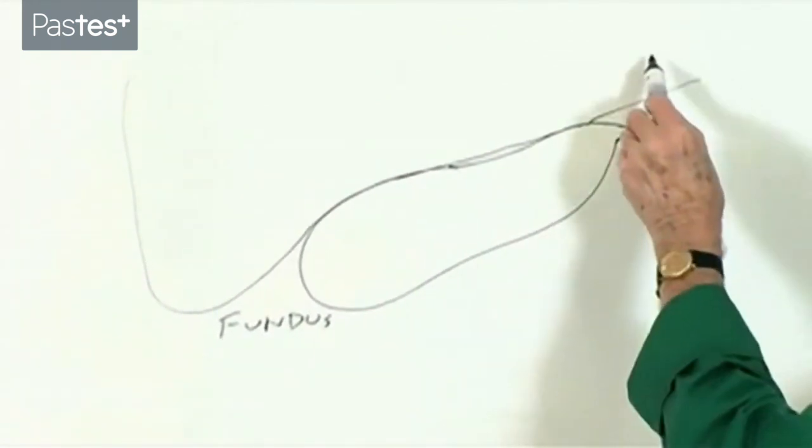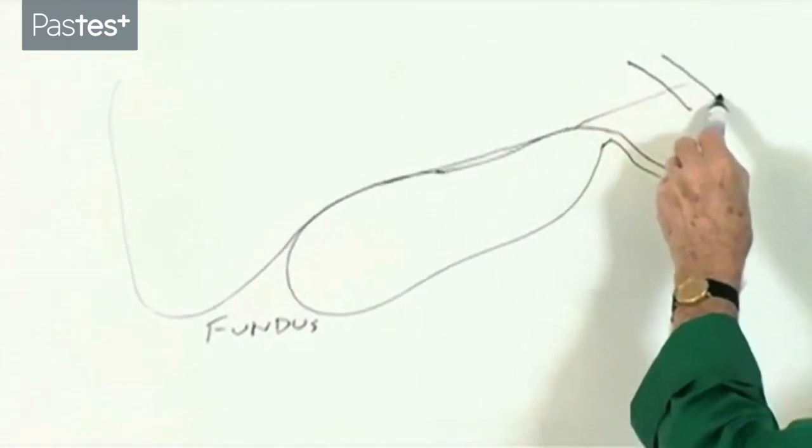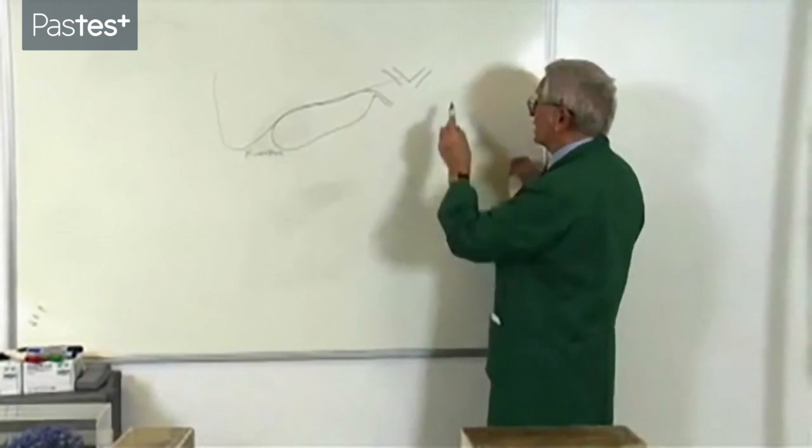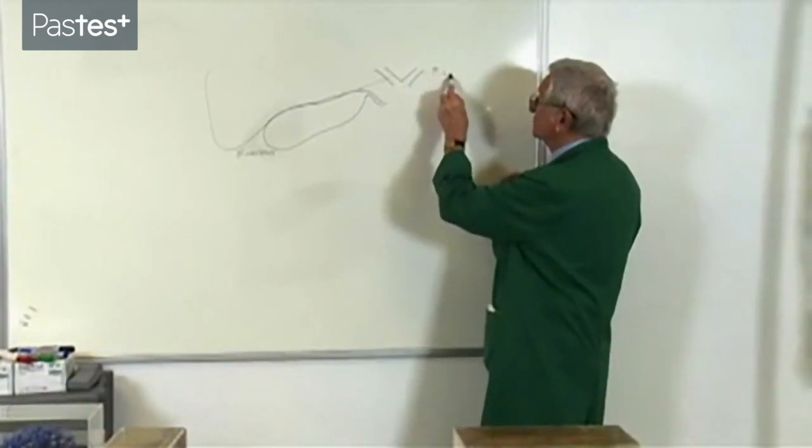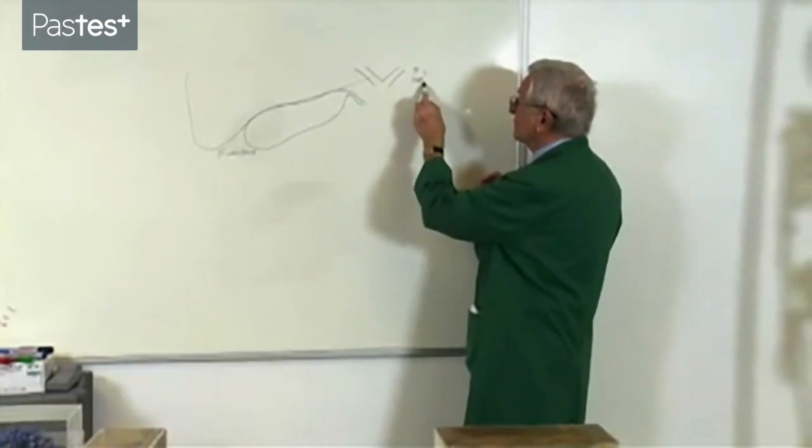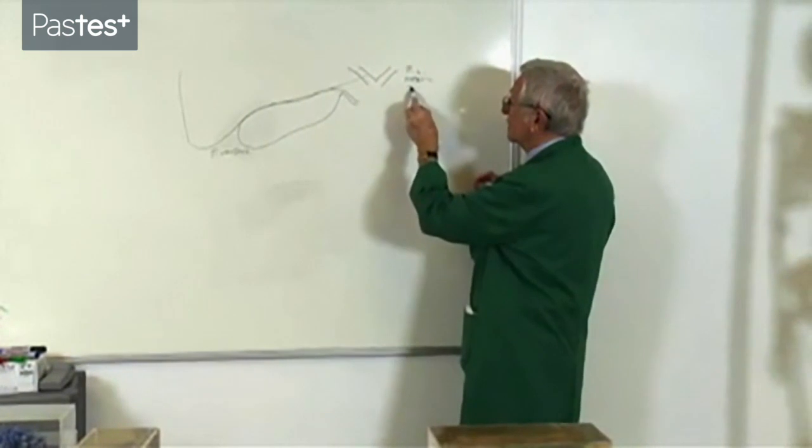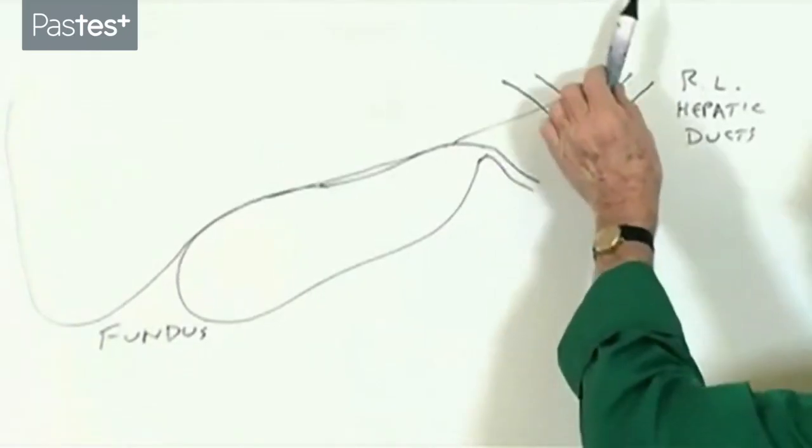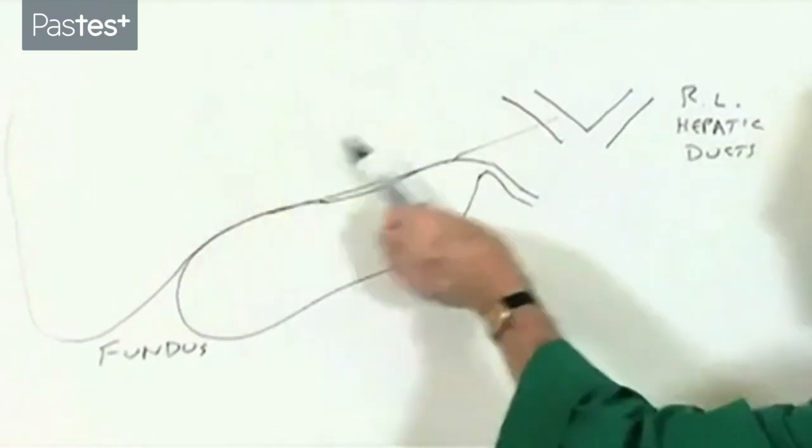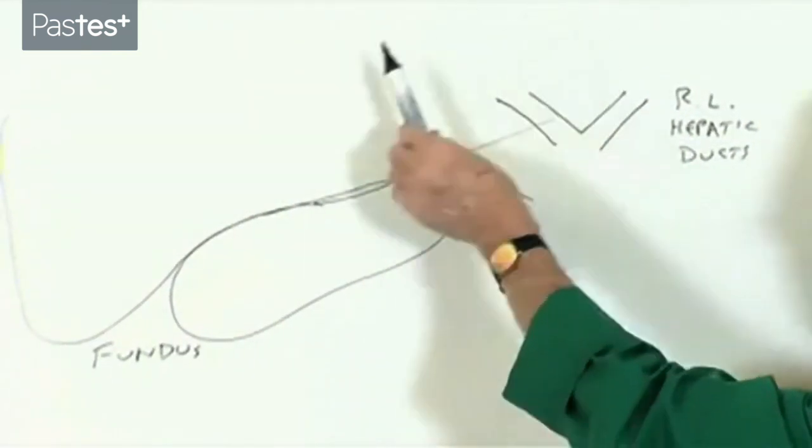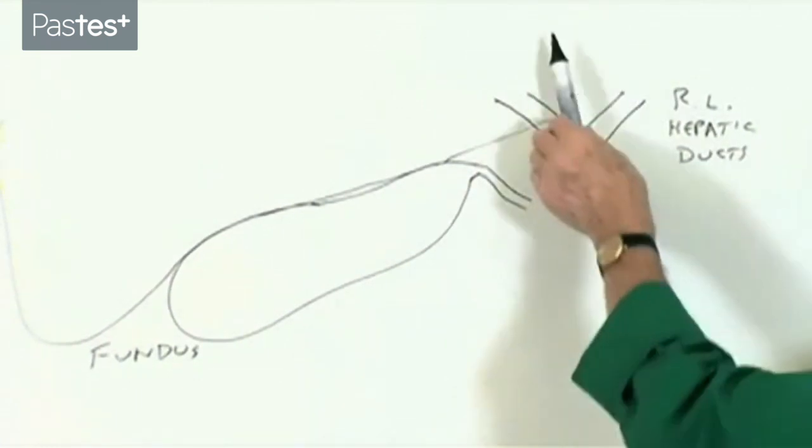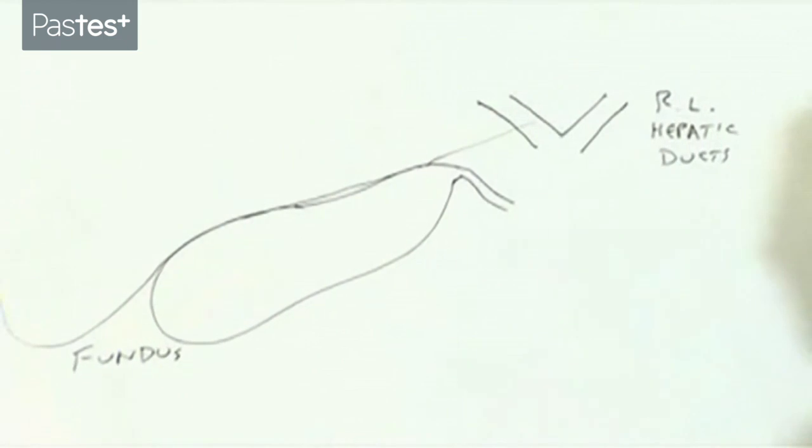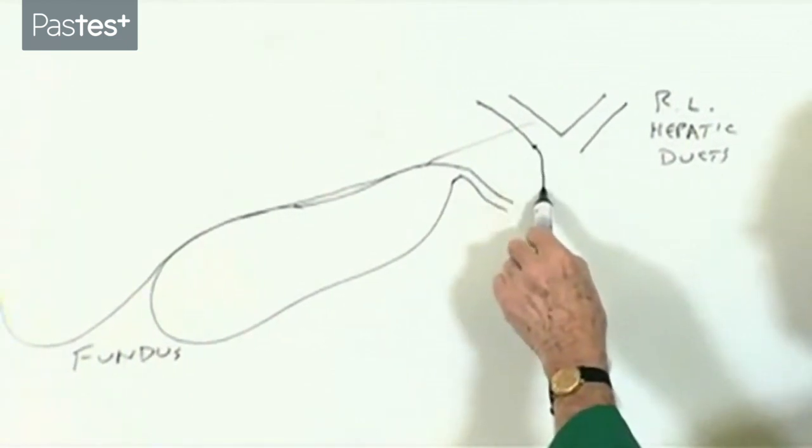Here's the liver. And from the liver, we have the right and left hepatic ducts, draining the whole of the functional right side of the liver, as we've already mentioned in our liver lecture. The left, draining the whole of the left functional lobe of the liver. They join together,